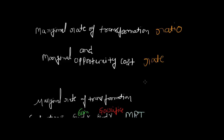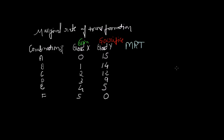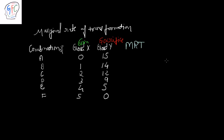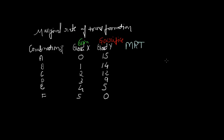Let us now solve an illustration to see how MRT is presented. We have combinations A, B, C, D, E, and F, with Good X and Good Y. Again, take a moment to identify the formula and the difference between MOC and MRT. In this illustration, Good X is being gained and Good Y is being sacrificed.